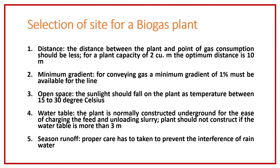Next is seasonal runoff — the same problem here. In the rainy season, if runoff falls into the digester through any leakages, that will also affect the working condition of the biogas plant. So care must be taken that there should be a proper facility to prevent the interference of rainwater into the digester.